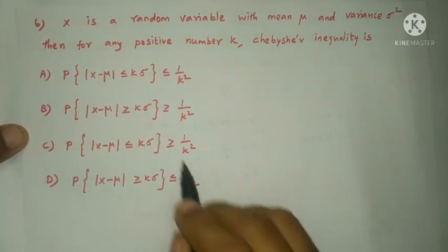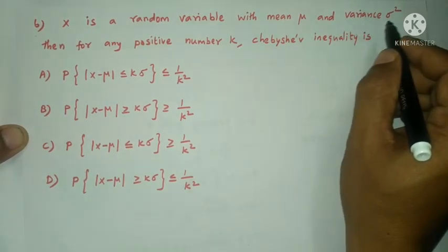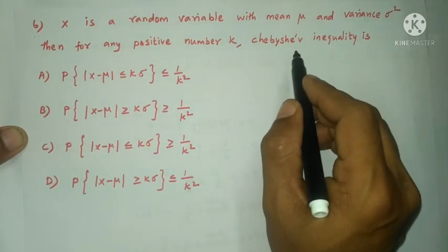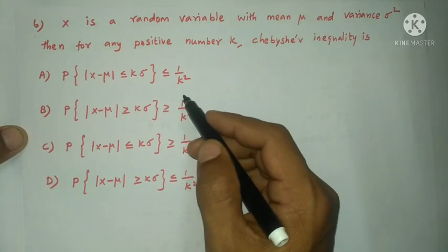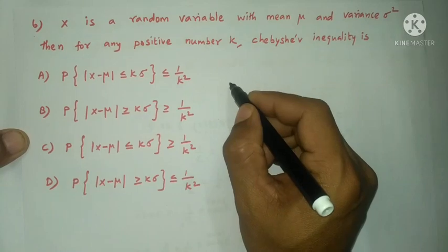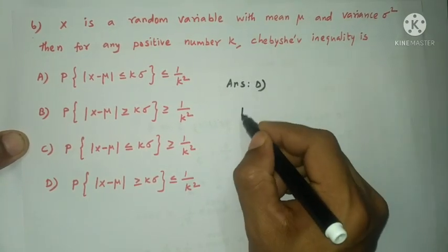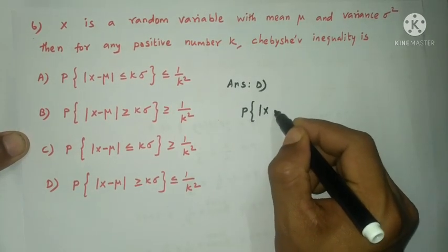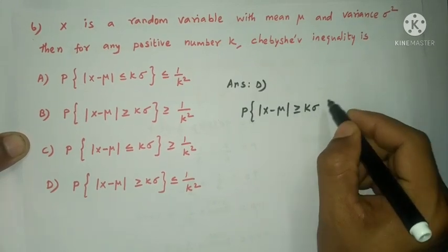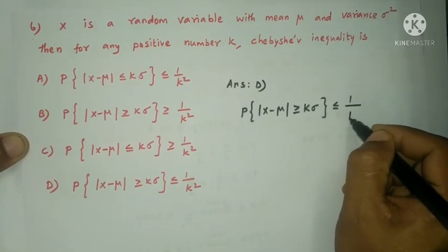Next question: x is a random variable with mean mu and variance sigma square. Then for any positive number k, Chebyshev's inequality is P of modulus x minus mu greater than or equal to k sigma, which is less than or equal to 1 by k square.